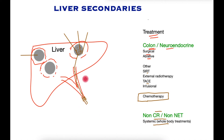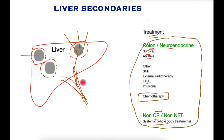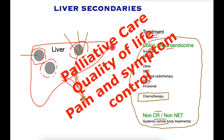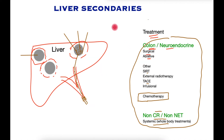Since spread to the liver denotes stage 4 disease, often patients may not be suitable for any of these treatments, and it is best to provide supportive treatment and palliative care. This is a specialist field in its own right, aiming at improving the quality of life and providing support. This completes this brief talk on liver metastases — if you have any comments please do share.